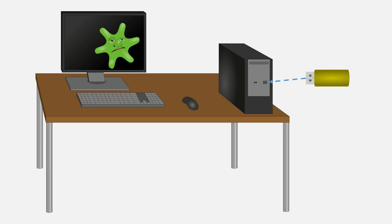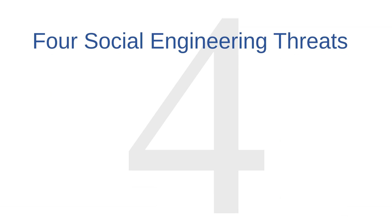The security testers knew that bank employees would feel curious when they saw the abandoned flash drives on the ground. They also knew that many employees would feel like they were doing the right thing if they plugged the USB drive into a computer, because they might be able to figure out who the drive belonged to. The security testers engineered the situation so that common social practices would lead the employees to put the company's computers at risk. There are many other kinds of social engineering — let's look at four common threats: instant messages, fake antivirus or scareware, emails, and phone calls.